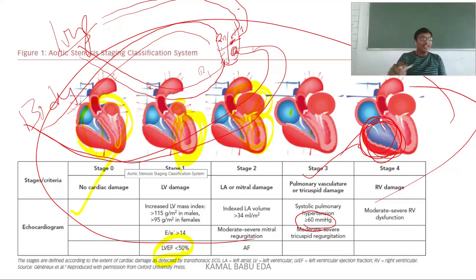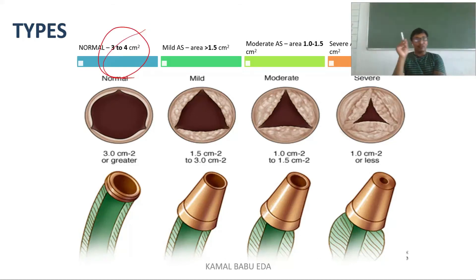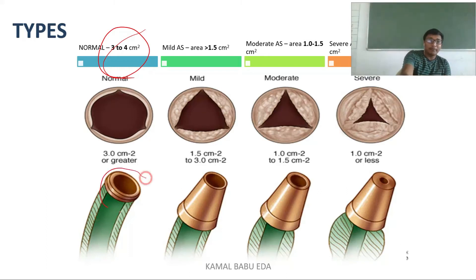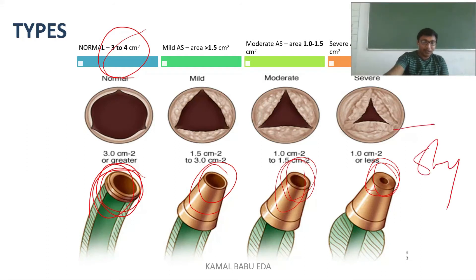There are four types of aortic stenosis by severity. Normal: valve opening is 3–4 cm. Mild: greater than 1.5 cm. Moderate: 1 to 1.5 cm. Severe: less than 1 cm. In normal, blood flow is attained normally; in mild there is some difficulty; in moderate more difficulty; and in severe the valve is nearly completely closed.